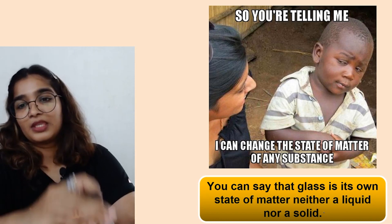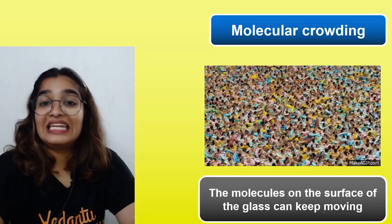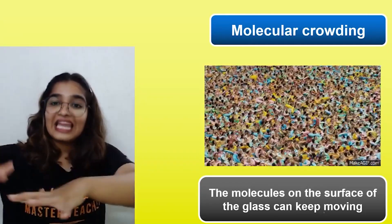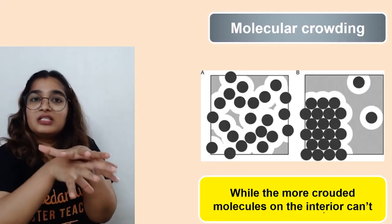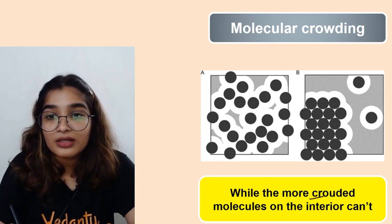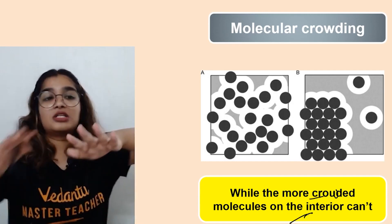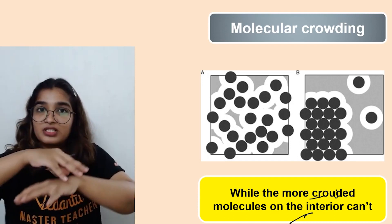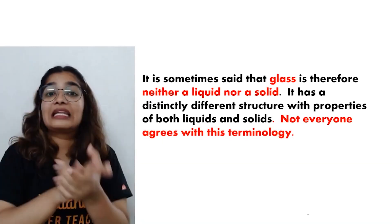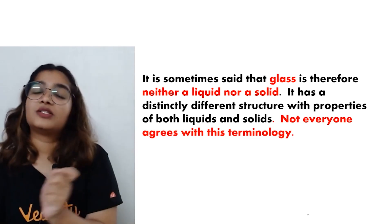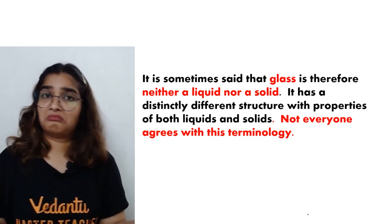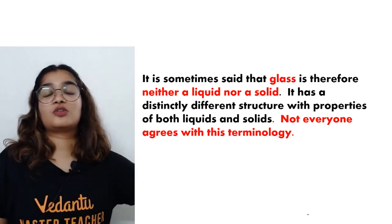Glass has its own state of matter — it is neither a liquid nor a solid in the traditional sense. The molecules on the surface can move, but the molecules on the interior cannot. Glass does not have a well-arranged crystalline lattice, yet it does not flow freely even though its viscosity is measurable.